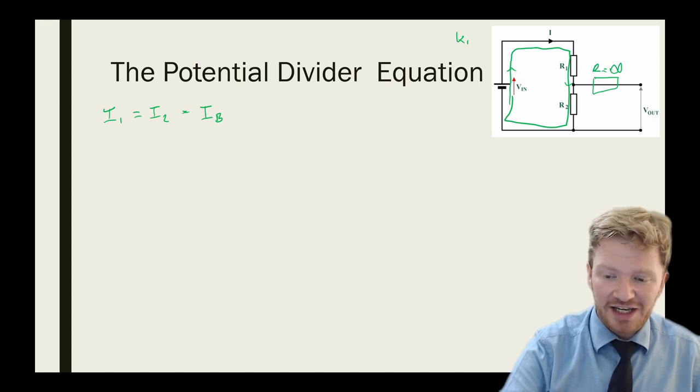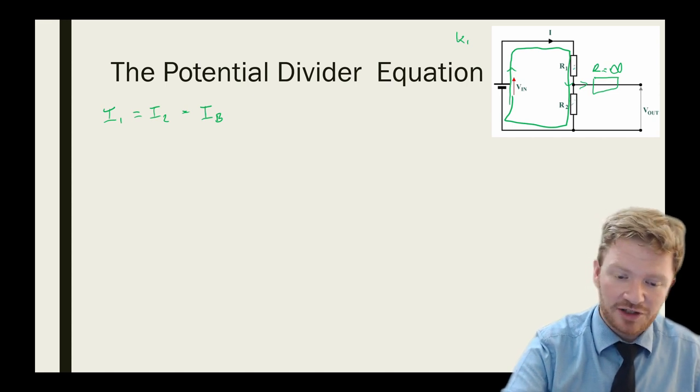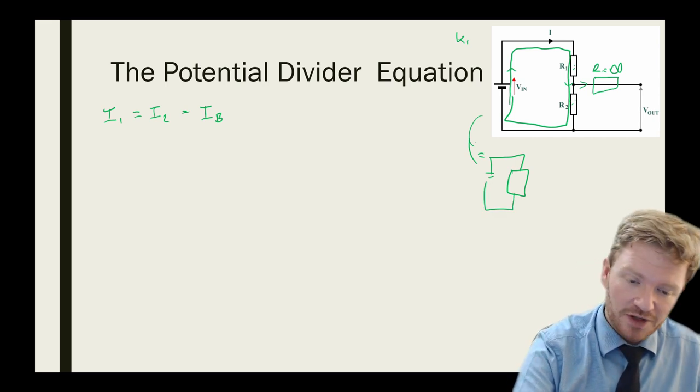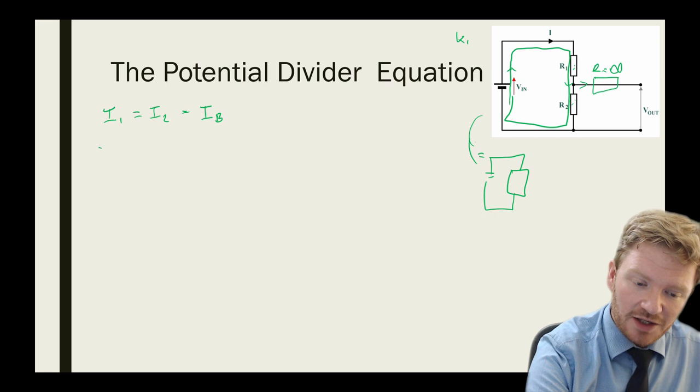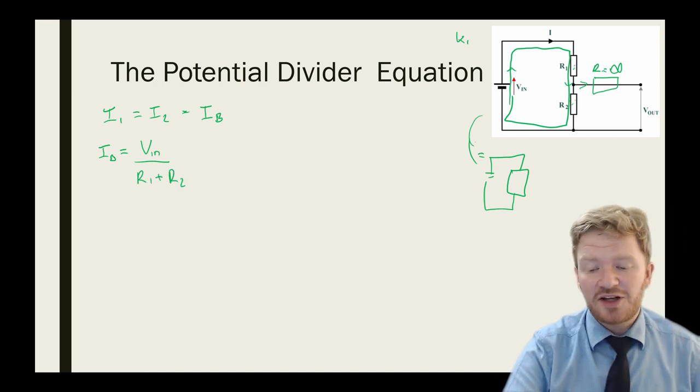Now can I work out what that current is? Well it turns out I can, because if we're assuming that no current goes down here, then I can treat these two resistors as though they are in series. So I can say that the current in the battery is equal to the voltage in the battery, which is V in, divided by R1 plus R2.